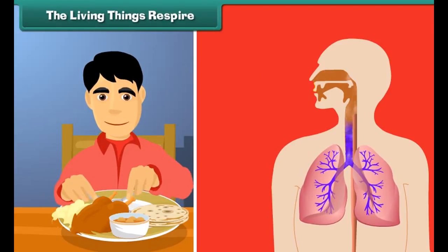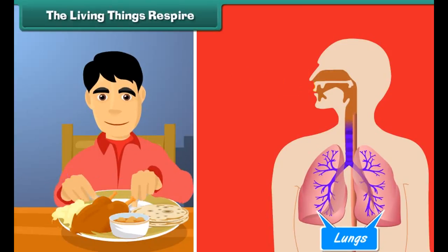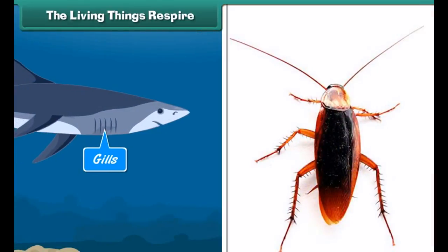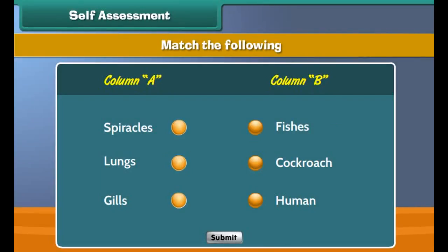Living things require oxygen to get energy from food. They get the required oxygen through the process of respiration. During respiration, oxygen is breathed in and through the blood it reaches each and every cell of the body. Human beings have lungs for respiration, fishes have gills, and cockroaches have spiracles.